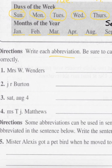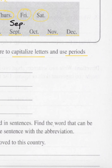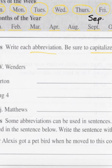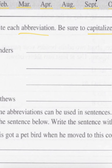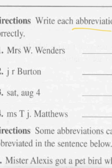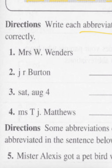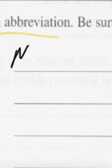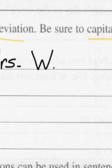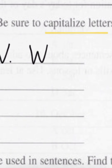Directions: write each abbreviation. Be sure to capitalize the letters and use periods correctly. Number one is Mrs. W. Wenders. This one is almost correct — they have one small error. The mistake is after Mrs. there should be a period: capital M-R-S period. And W. Wenders — W is the first letter of the first name, you get a period, and then the full last name, Wenders.